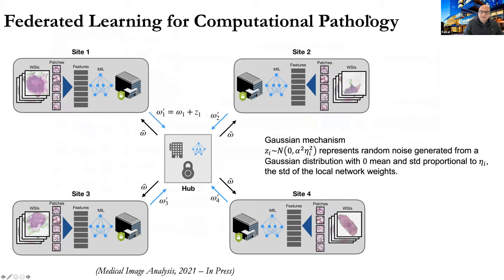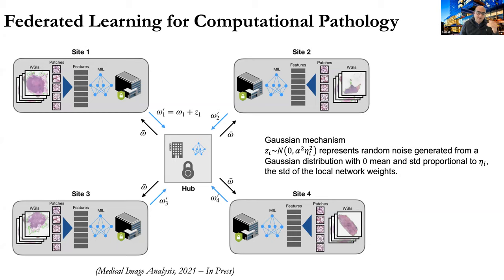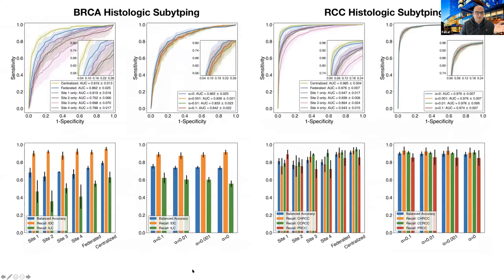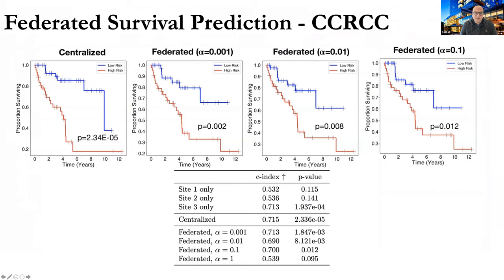Using the CLAM-based setup, the group also developed a federated learning architecture that is publicly available and being used for actual experiments. They showed that both classification and survival/outcome prediction problems can be addressed in a federated setting where data is distributed across multiple sites and protected by differential privacy, using very basic aggregation functions such as averaging. Examples include breast cancer subtyping and renal cell carcinoma subtyping, with a preprint already available and a full article coming soon.